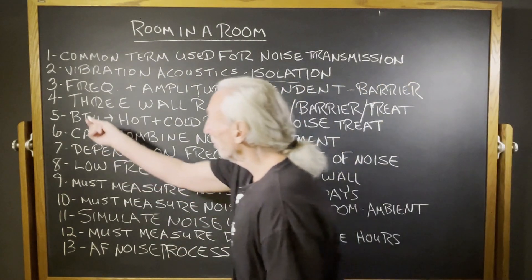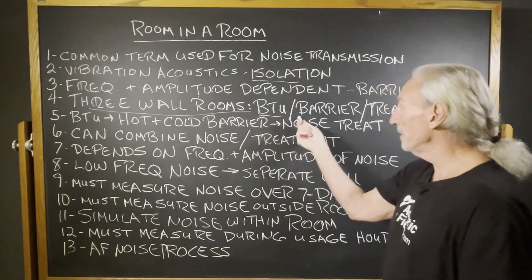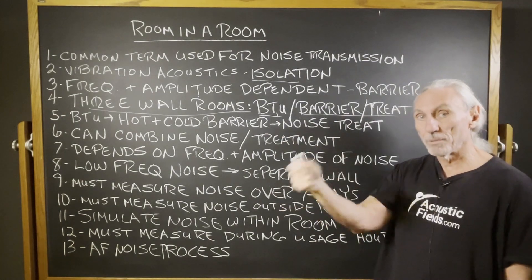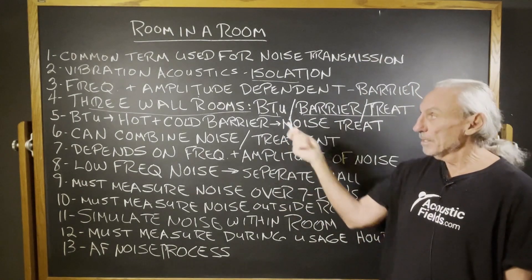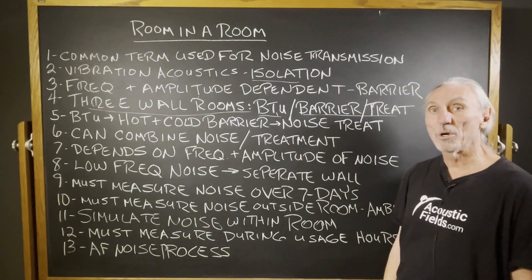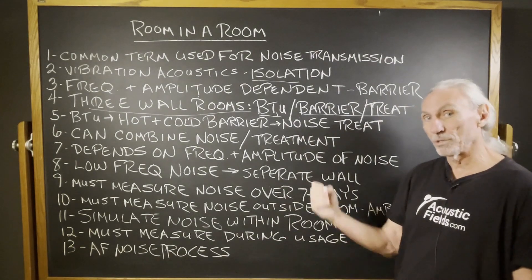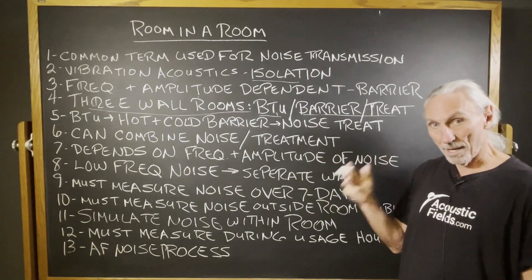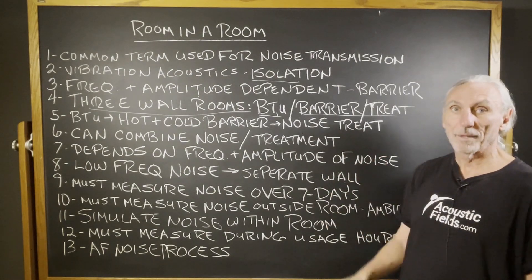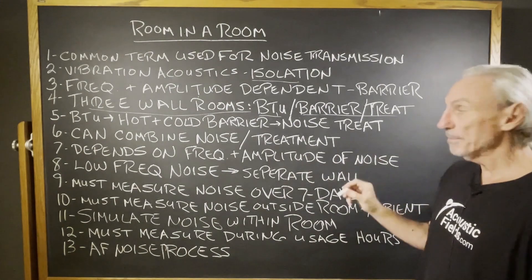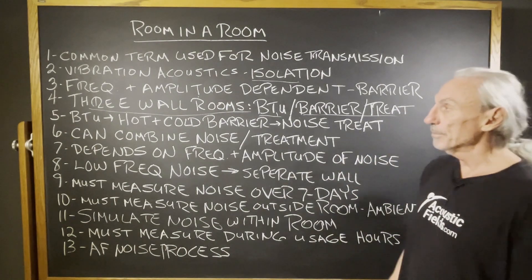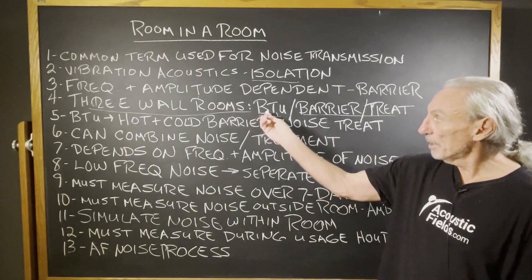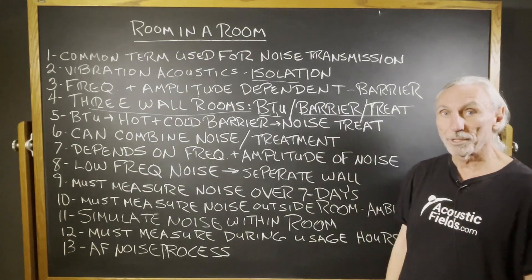We have three types of room walls that we have to be careful with. We have a BTU wall, a barrier wall, and a treatment wall. BTU is hot and cold — keeping your room warm or cold. Those are regulated by city and government codes: so much R value, so much this, so much that. The barrier is noise — what frequency and what amplitude of noise do we have to stop? We have to measure. Then the inside of the room is the treatment — the absorption and diffusion.